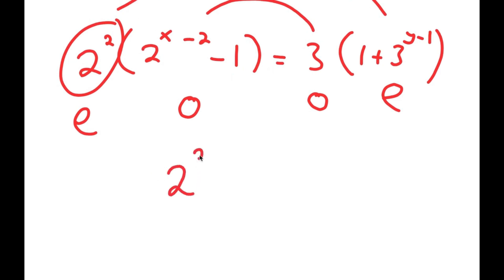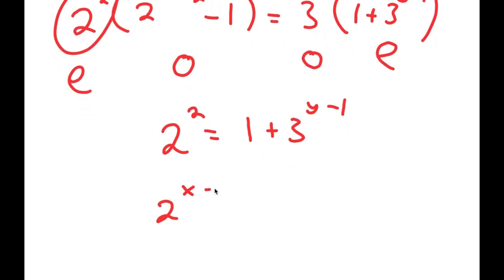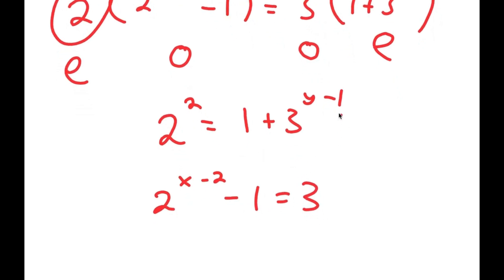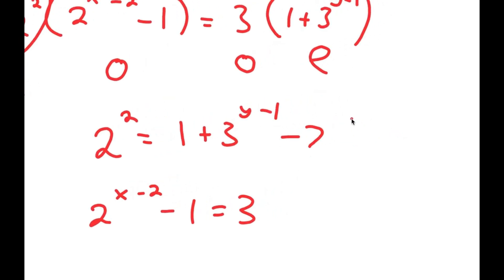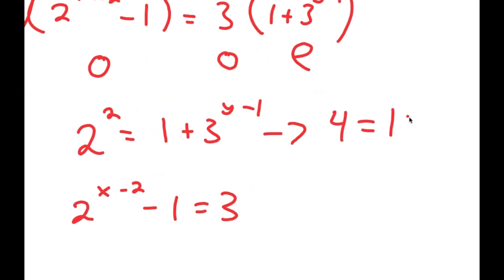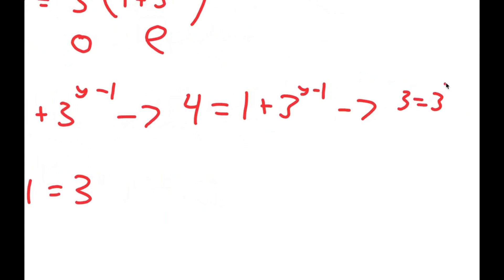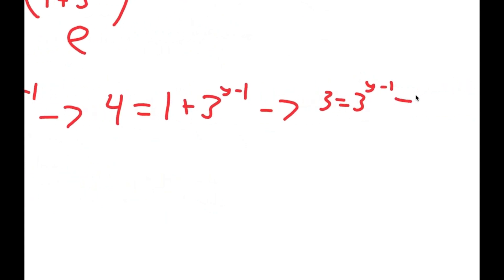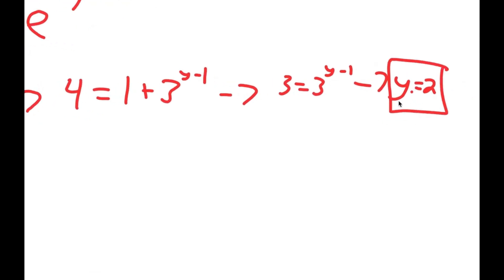I'm going to set the odd numbers equal to each other and the even numbers equal to each other, giving me two equations. The first is 2 squared equals 1 plus 3 to the power of y minus 1, and the second is 2 to the power of x minus 2 minus 1 equals 3. Starting with the first equation: 4 equals 1 plus 3 to the power of y minus 1, which means 3 equals 3 to the power of y minus 1, so y equals 2.